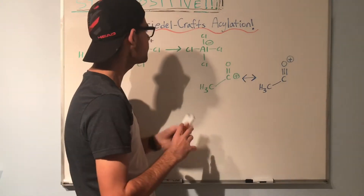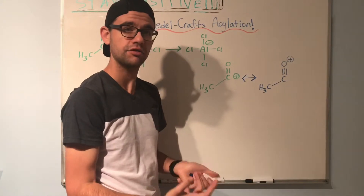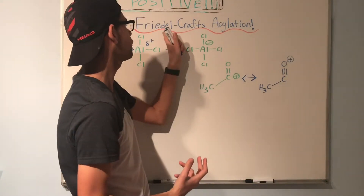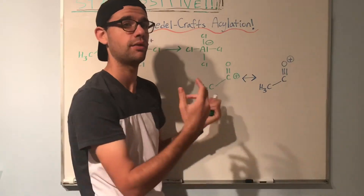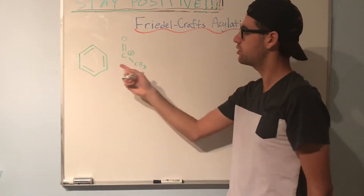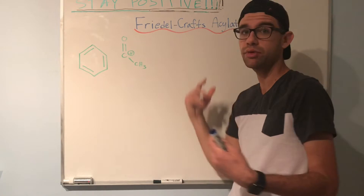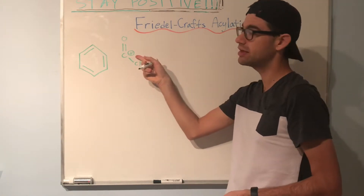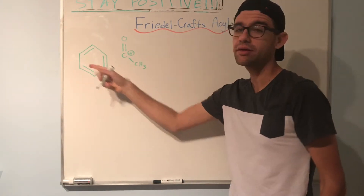Now that we've seen how to generate our strong electrophile, let's see the mechanism for Friedel-Crafts acylation using the strong electrophile with benzene. Here I've drawn our two reactants: our strong electrophile that we generated in the previous step — remember it does have a resonance form — and benzene.